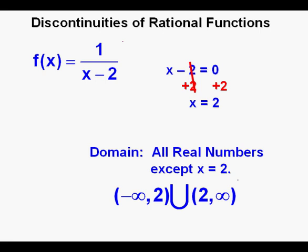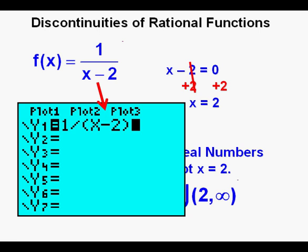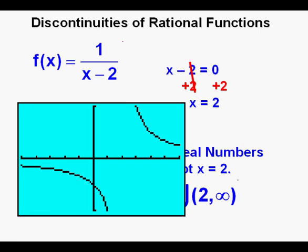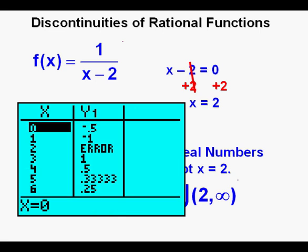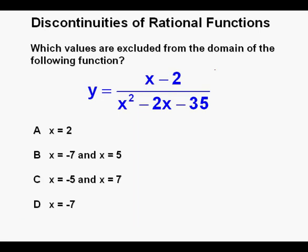To graph this function, we place it in the function editor. Make sure that if there is more than one term in either the numerator or denominator, wrap that numerator or denominator inside parentheses — note how x minus 2 in the denominator is inside parentheses. Press graph or zoom 6. Here is a vertical discontinuity drawn in red at about x equals 2. We can confirm by going to the table view by pressing 2nd then graph, where we see an error at x equals 2.